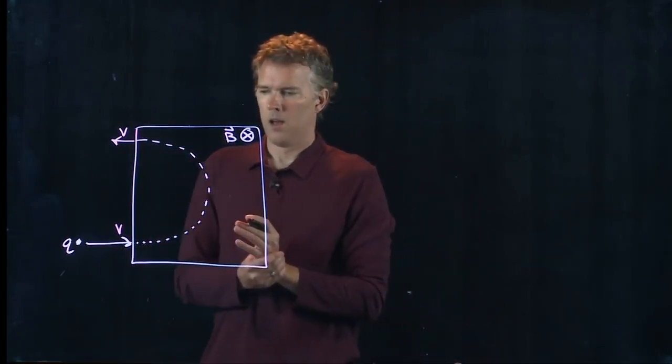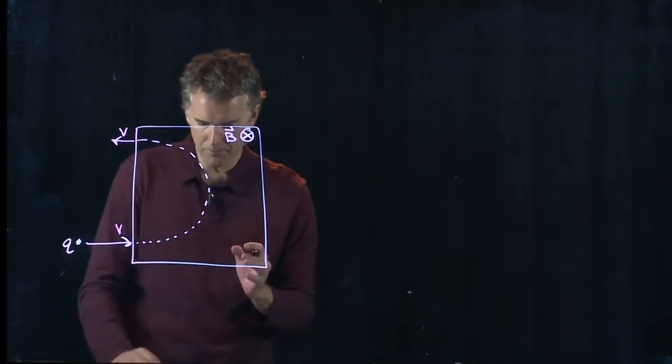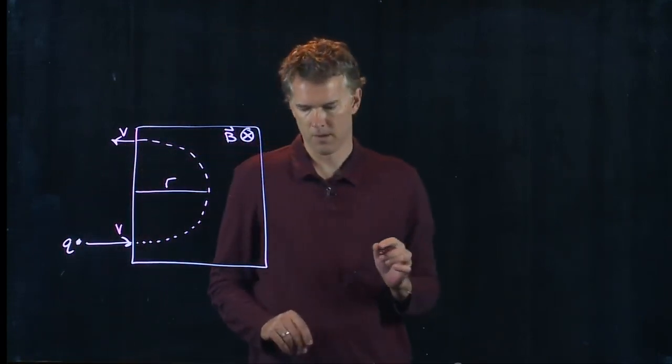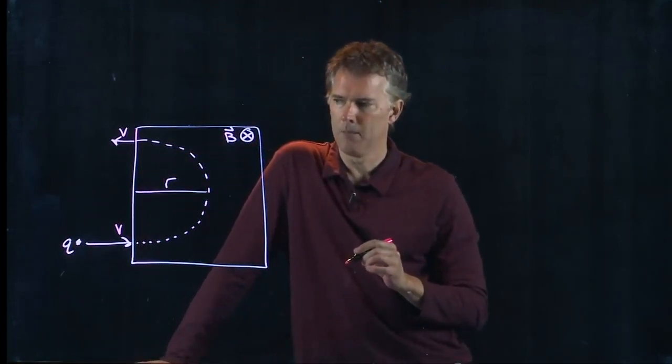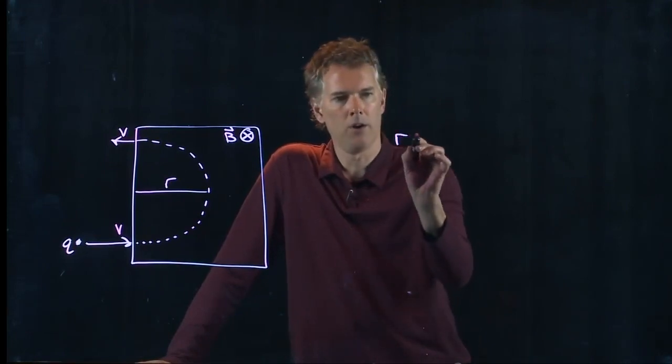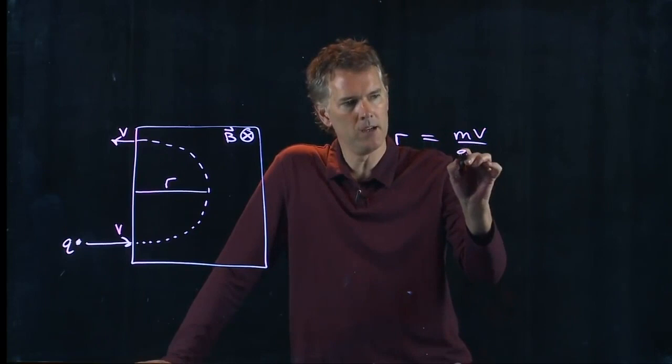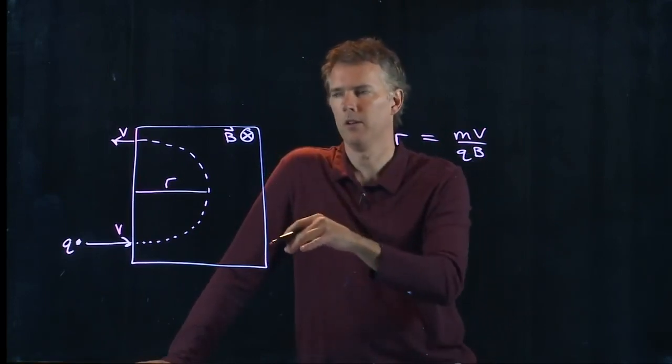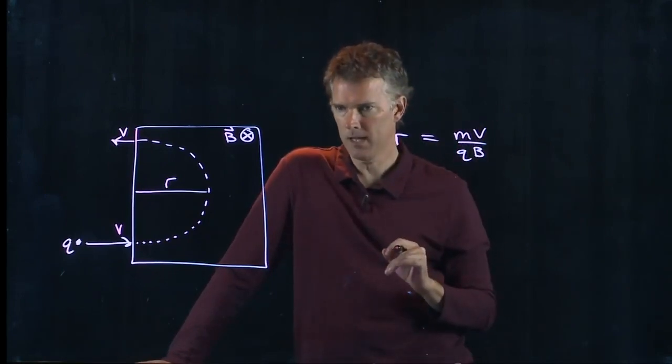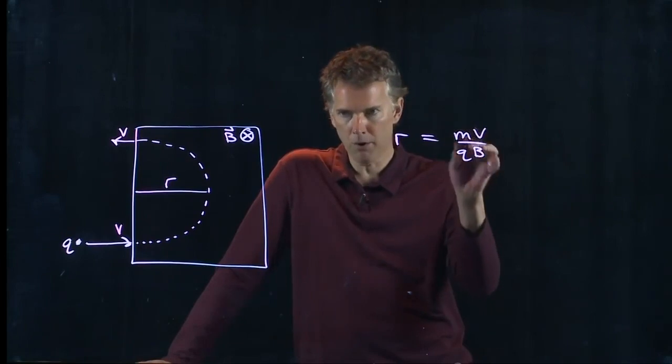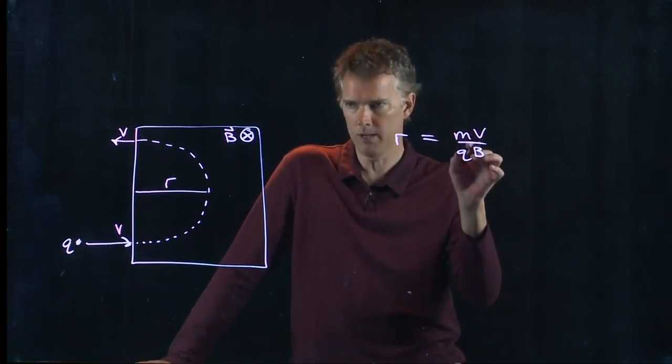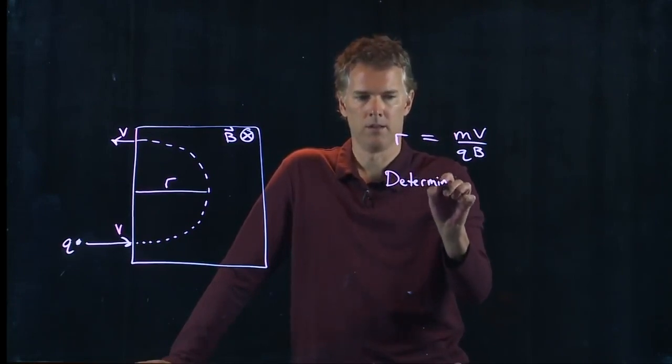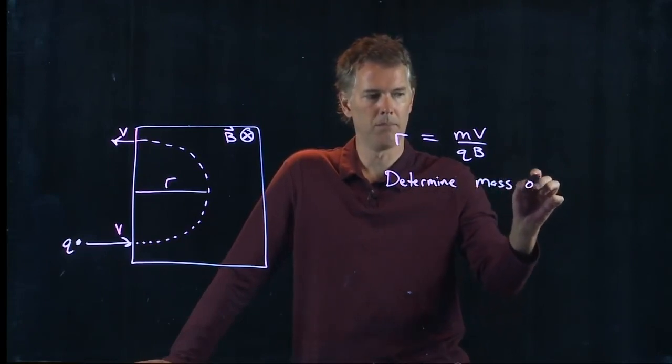How do we determine something about this radius R of curvature? Well we talked about this last time and what we said was that R is just MV divided by QB. If I know the charge, I know the magnetic field, then I can calculate exactly what that radius is, and if I shoot particles into this thing with a known V then in fact I can determine the mass of the particle.